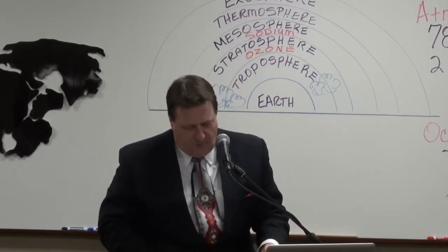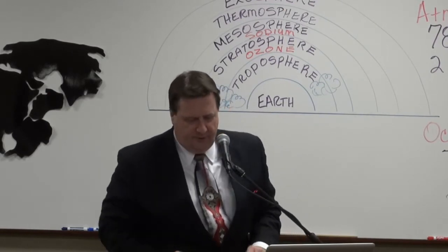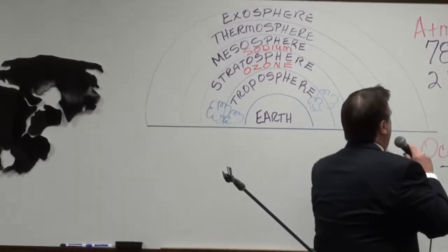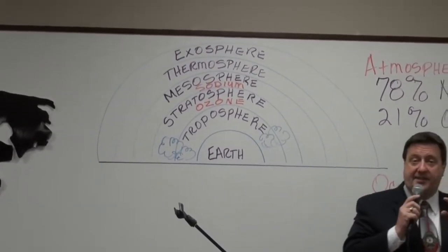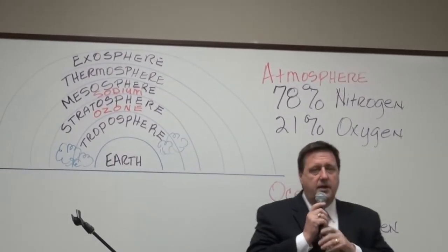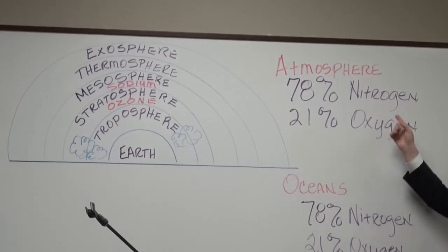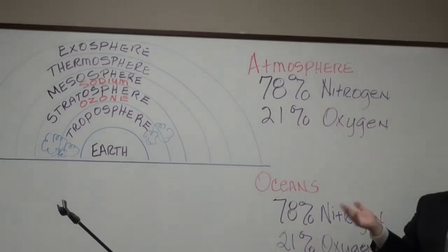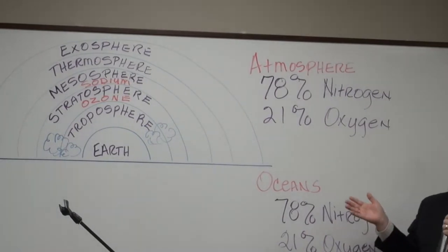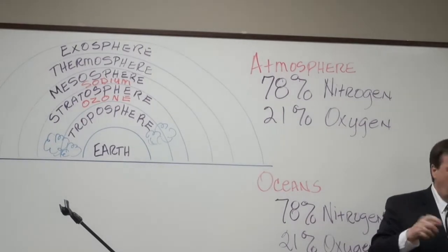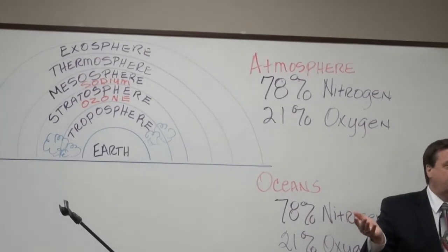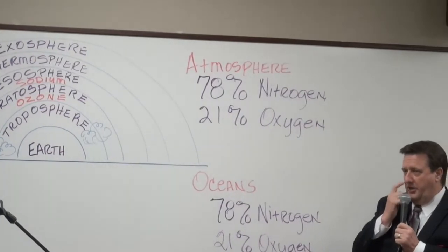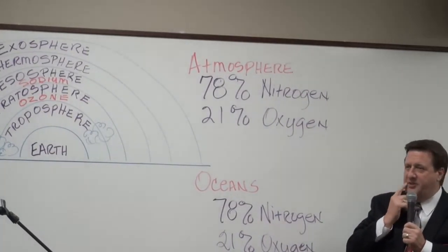On page 14 of our notes, the atmosphere is made up of dissolved gases: 78% nitrogen, 21% oxygen, and 1% other dissolved gases. Interestingly, the ocean has these same dissolved gases — 78% nitrogen and 21% oxygen. Do you notice the similarity between the atmosphere and the ocean?